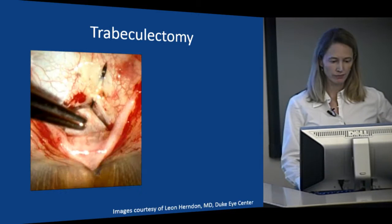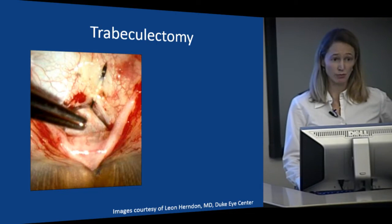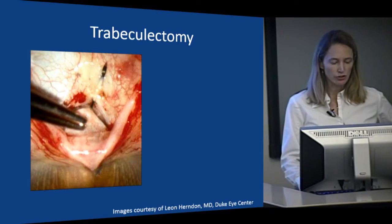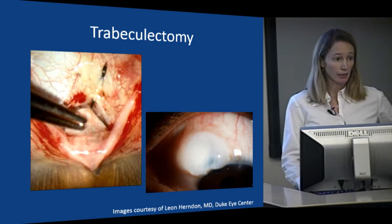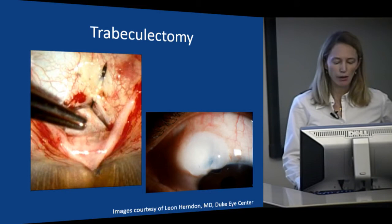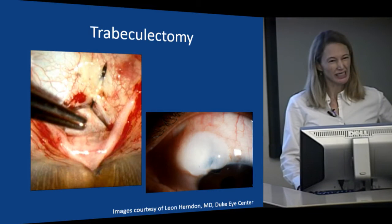Trabeculectomy surgery is an incisional surgery which can be very effective at getting the pressure low — it can even get patients off drops completely. This is a surgeon's view of a trabeculectomy where a partial thickness scleral flap has been created and the surgeon is passing a suture through to create a guarded filter so that aqueous humor in the anterior chamber will pass through that filter and out into the conjunctiva. That fluid creates a bleb or blister underneath the conjunctiva, which is then drained by the thin vessels running through the conjunctiva.